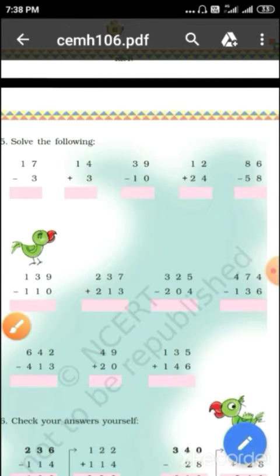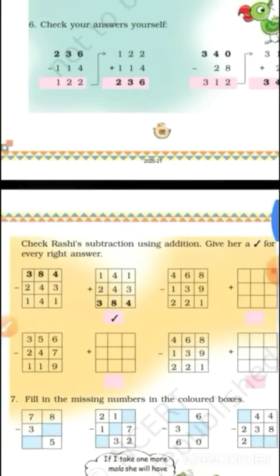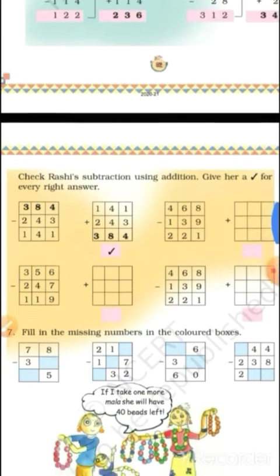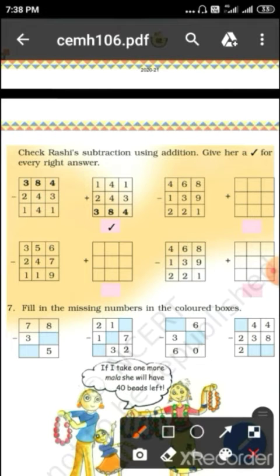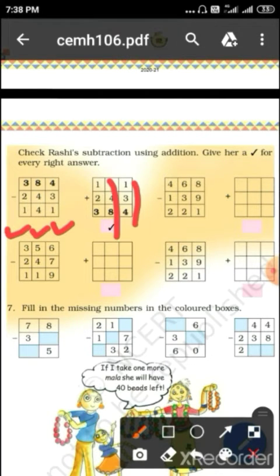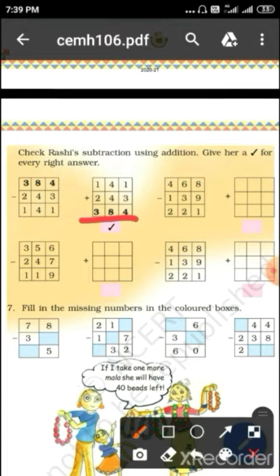This page has been taught before to remind you — check subtraction using addition. Here you have to learn how to check. Look: 4 minus 3 is 1, 8 minus 4 is 4, 3 minus 2 is 1. So 141 plus 243: ones 3 plus 1 is 4, tens 4 plus 4 is 8, hundreds 1 plus 2 is 3. So 384 is the answer.